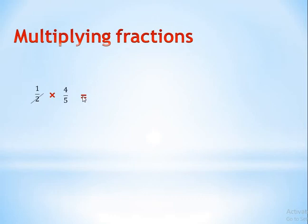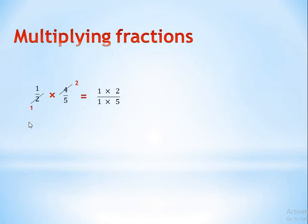Cross out 2: 2 divided by 2 equals 1, and 4 divided by 2 equals 2. Do we have any more numbers in the numerator and denominator that can be simplified? No, we don't. So we multiply numerator by numerator and denominator by denominator: 1 times 2 equals 2, and 1 times 5 equals 5. The answer is 2 over 5.